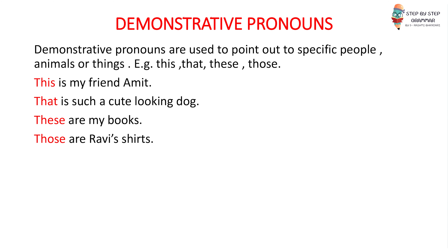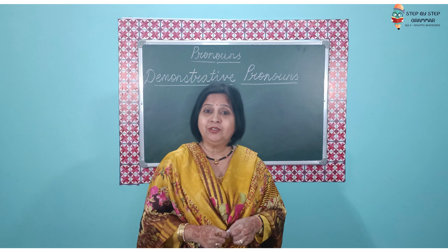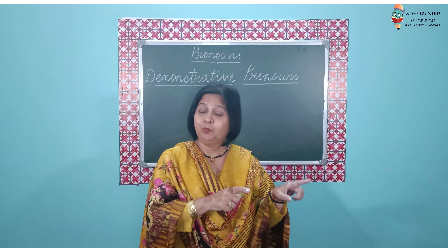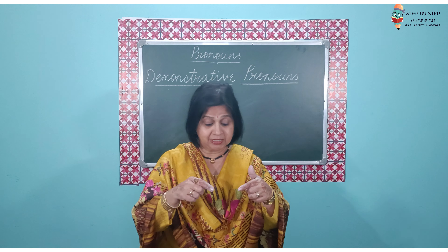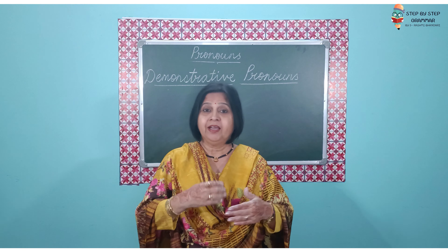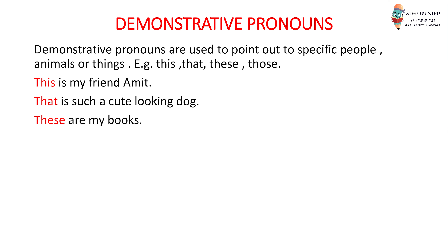The next kind of pronouns we are going to cover are demonstrative pronouns. These pronouns are used to point out people, things, or animals. For example: this, these, that, those. And how do we use them? This is my friend Amit. That is such a cute looking dog. These are my books. Those are Ravi's shirts.